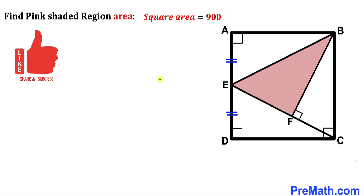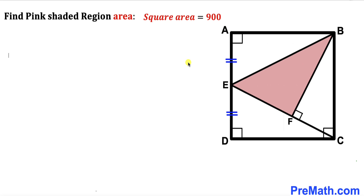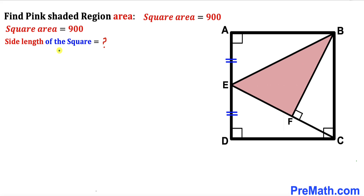Please don't forget to give a thumbs up and subscribe, and keep in mind that this figure may not be 100% true to scale. Let's get started. Here's our very first step: we know the area of square ABCD is 900 square units, and our task is to calculate the side length of this square. Let's recall the area of a square formula.